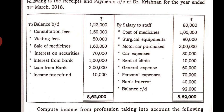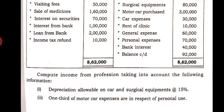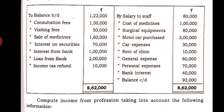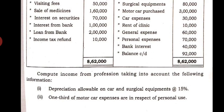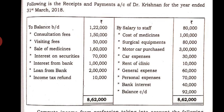For expenditures, we consider cost of medicines normally, and surgical equipment. Surgical equipment is a capital expenditure, so the adjustment is the depreciation allowable on car and surgical equipment. Depreciation is an allowable revenue expenditure — we charge depreciation on the asset at the given rate of 15%. Motor car purchased is a capital expenditure, so we allow depreciation. One-third of motor car expenses are for personal use, which means only two-thirds come under professional expenditure.